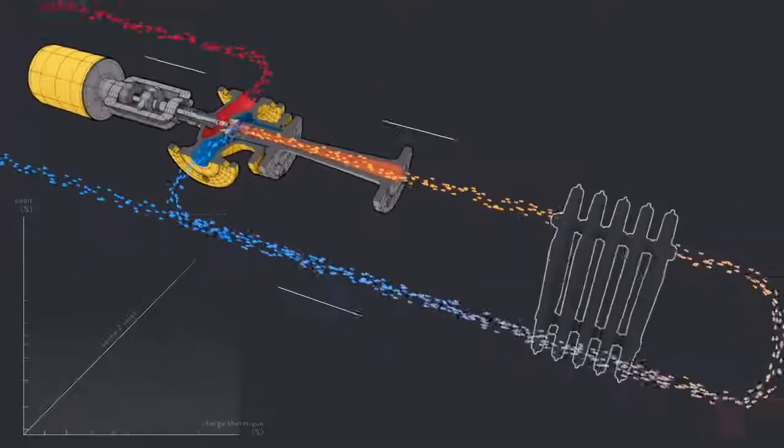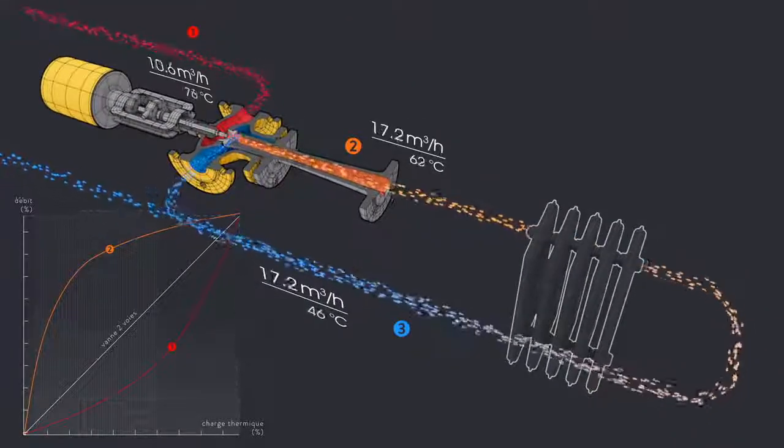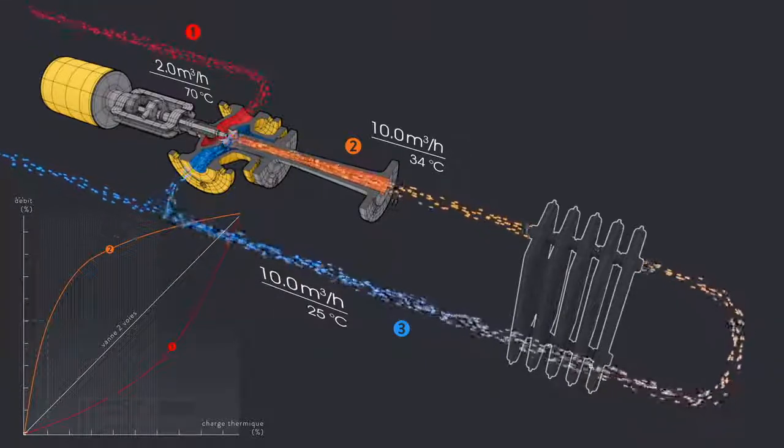The volume flow and the admixture of the return water are regulated by positioning the nozzle plug. In this way, the required flow temperature by the heating circuit can be achieved very accurately.